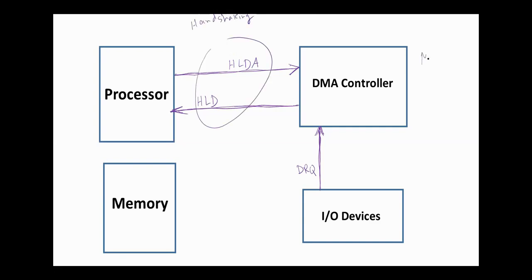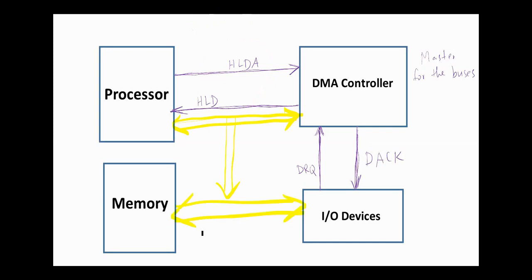Now the DMA controller becomes the master for the buses. After receiving the hold acknowledgement from the CPU, the DMA controller acknowledges the I/O device with a device acknowledgement that the data transfer can be performed. And under the control of DMA, the transfer is made between the I/O device and memory or vice versa. And here we have the control signal, I/O read/write.